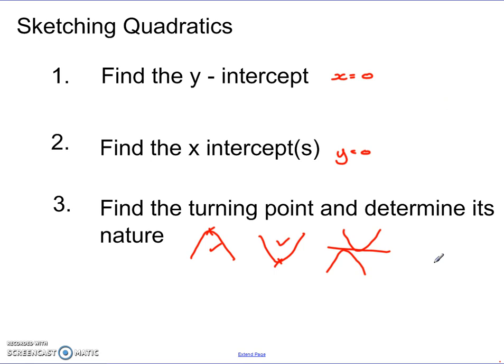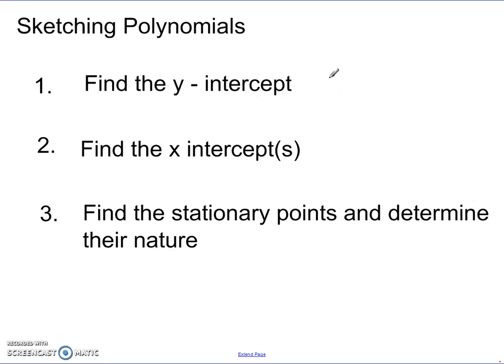Sketching a polynomial isn't much different — we still follow the same general steps with just a couple of tweaks. Finding the y-intercept is still the same: set x equal to 0. Finding the x-intercepts is also the same: set y equal to 0 and solve. The only difference is we may get more than two x-intercepts, and we may need synthetic division or algebraic long division to factorize the polynomial.